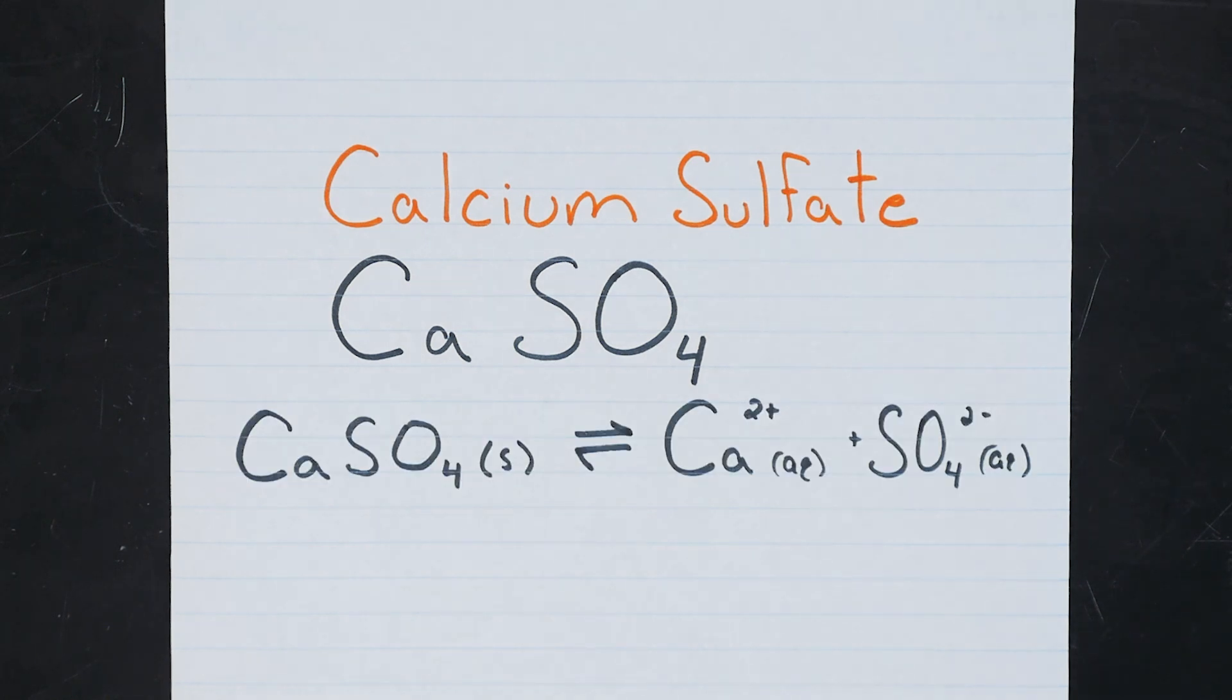This is, in fact, an equilibrium, meaning that not 100% of the solid calcium sulfate will dissociate into its ions. So solubility is really a continuous property, and some salts can be more soluble than others.